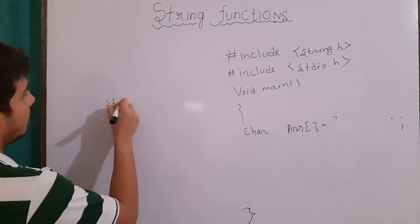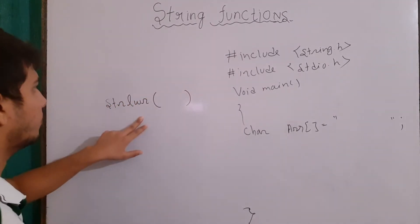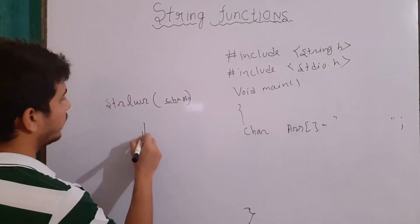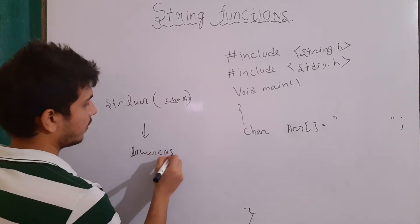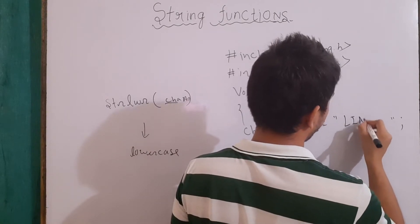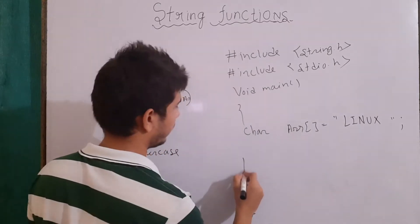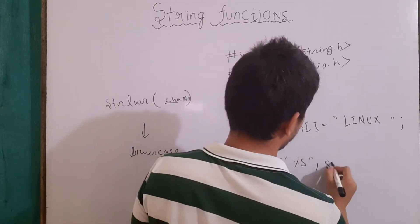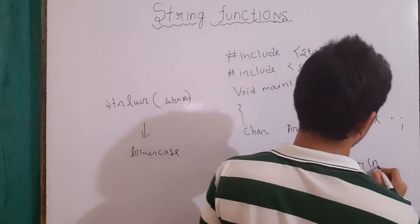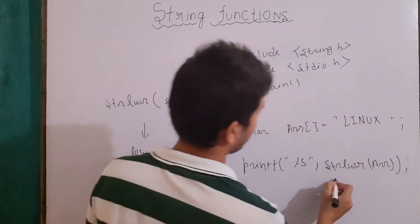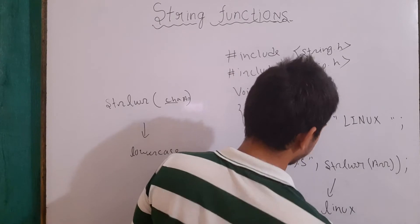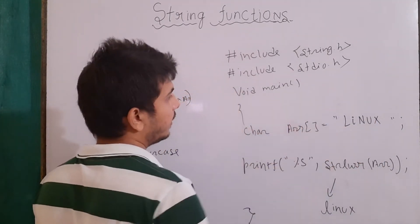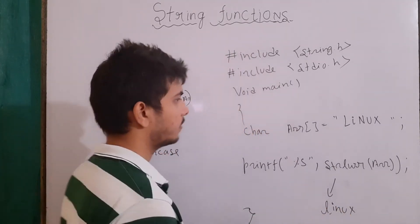Our third function is strlwr, which is string lower. It will take a character array or a string as input and make each character lowercase. For example, if our array is "LINUX" in capitals and we write printf("%s", strlwr(arr)), the output will be "linux" in lowercase. If the characters were already lowercase, there will be no difference.